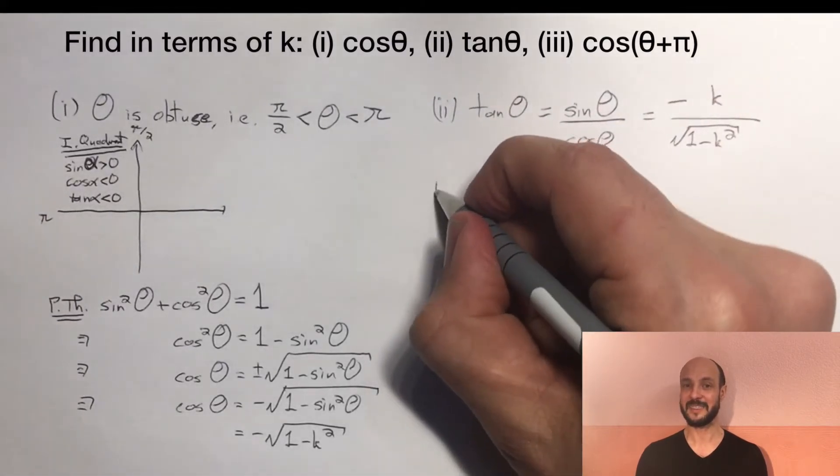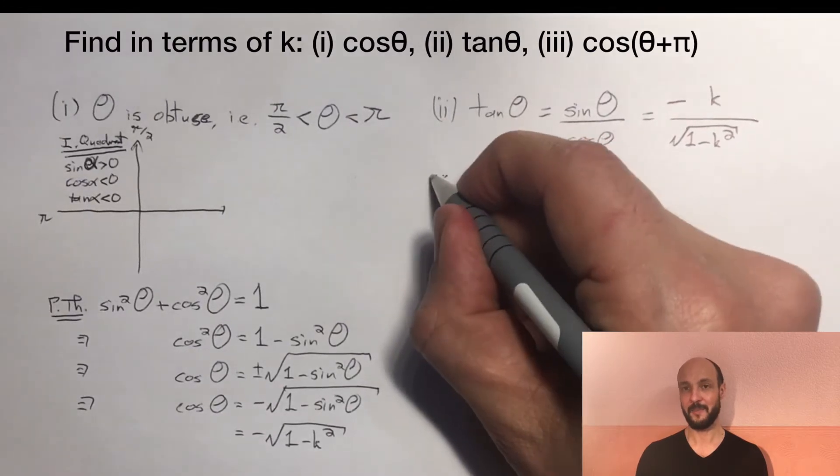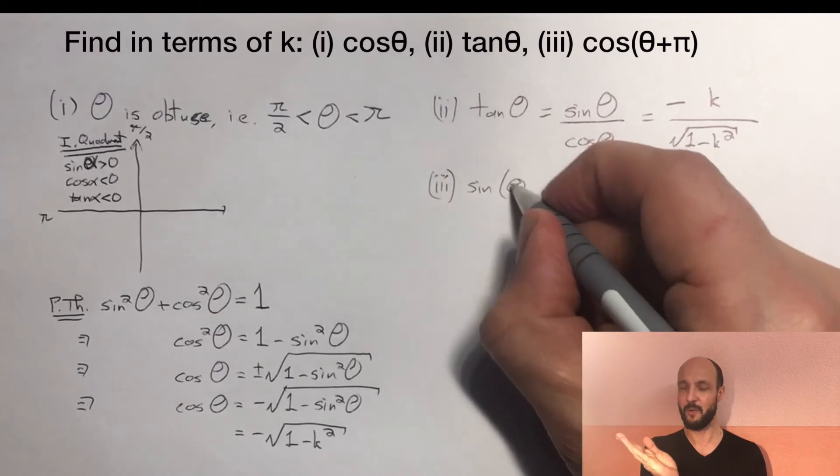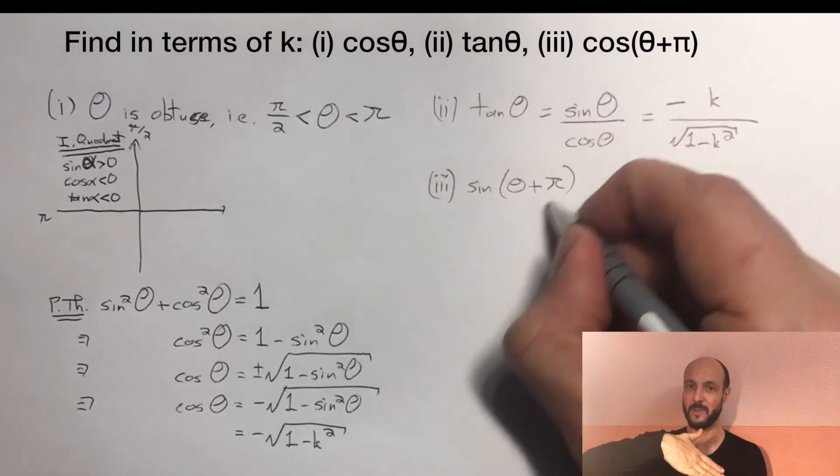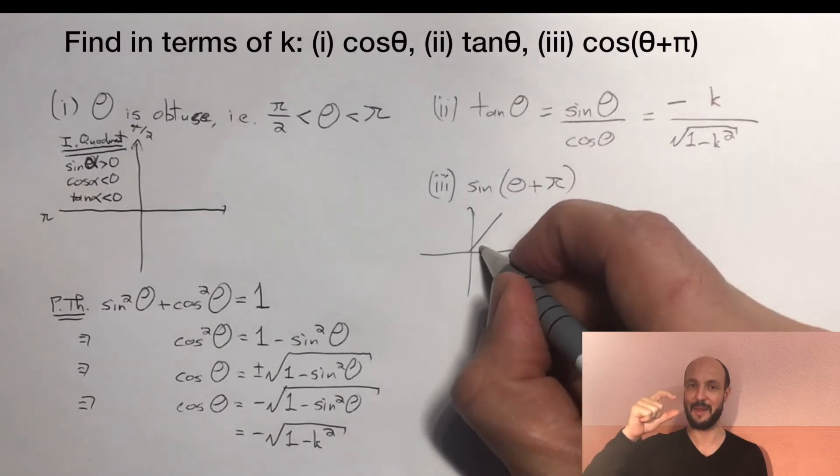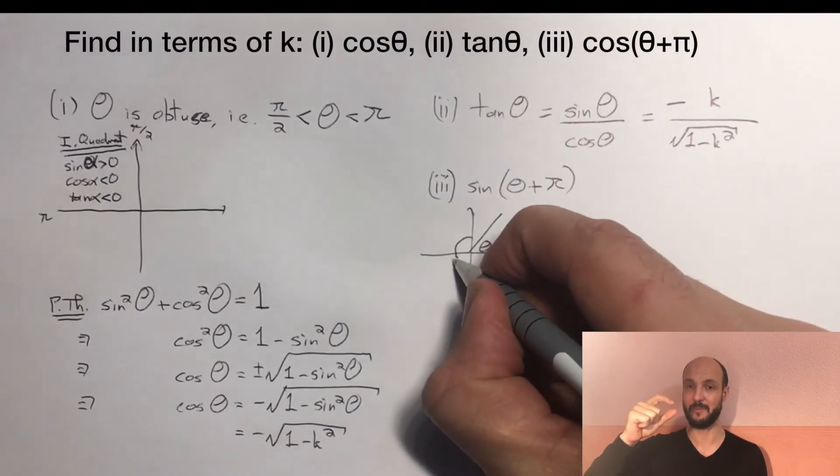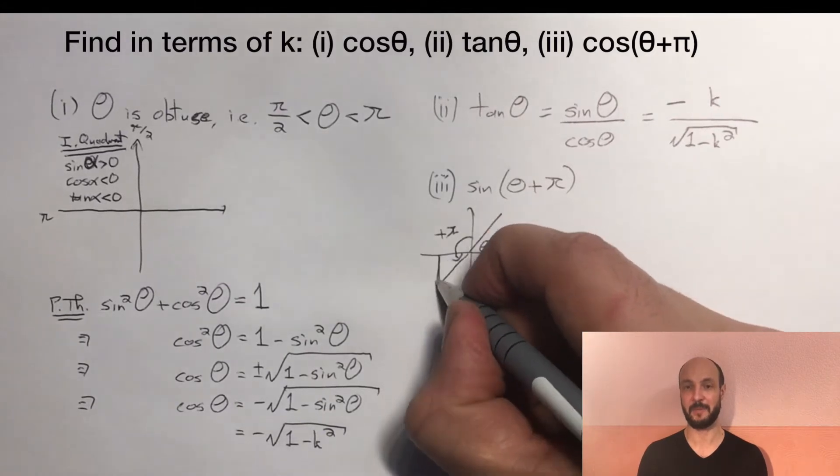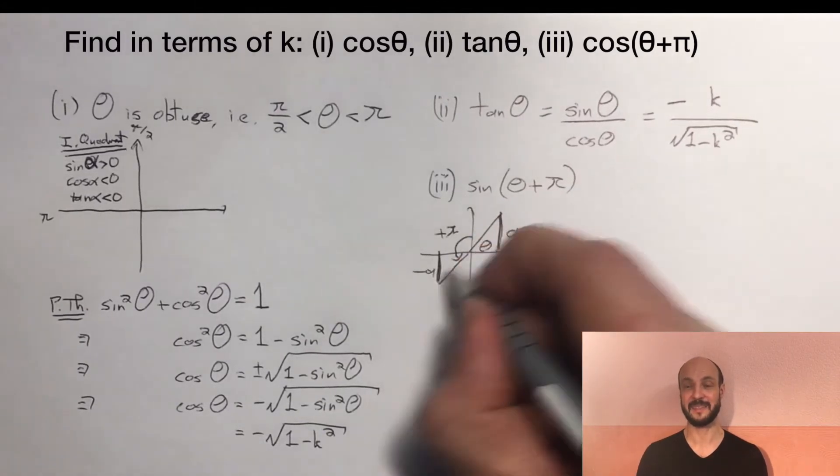And then the third part of our question, sine of theta plus pi. If we do a little diagram to think about it, we've got an angle of theta. If we add pi to it, what do we get? Well, we get the negative line that's the same length as the positive line when we had theta. And that's because sine of theta plus pi is equal to minus sine theta.